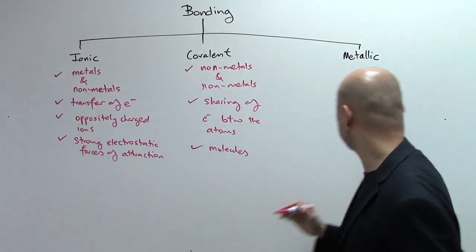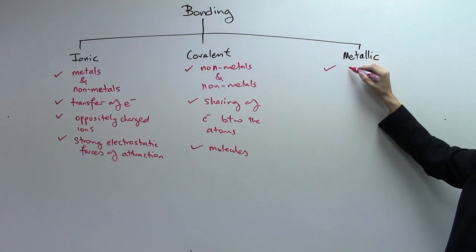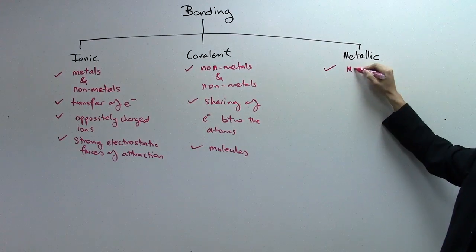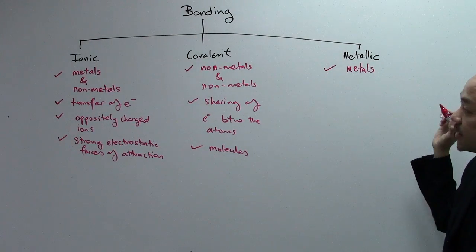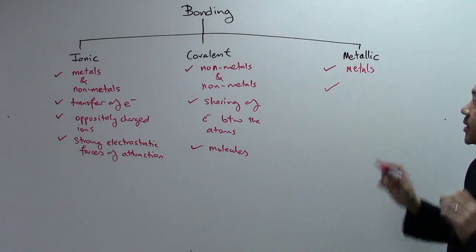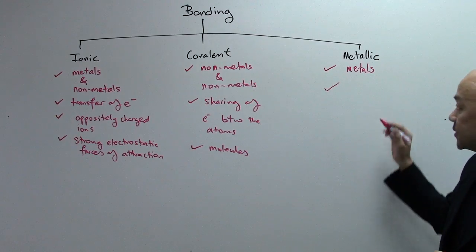Metallic bonding is slightly different. In metallic bonding, it literally involves only your metals. It only involves metals. In fact, all metals have metallic bonding. What happens is in metallic bonding, the atoms that are involved, the metals, they have valence electrons.